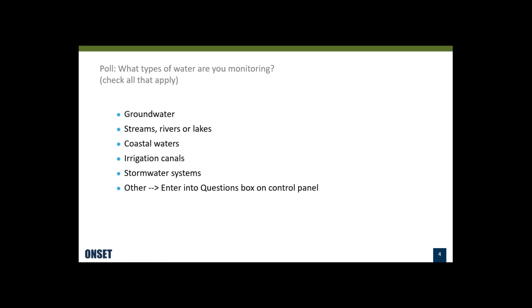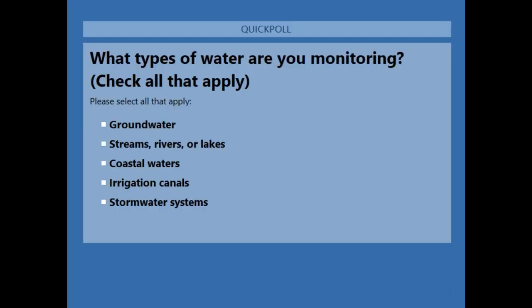First, I want to start out with a quick survey to find out a little bit more about what you're involved in. I'm asking you to enter in the types of environments — you can enter multiple choices — to say what kind of environment you're monitoring water levels in. If you don't see an appropriate choice or want to add another application, you can fill it in the questions box in your control panel.